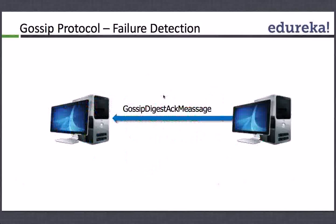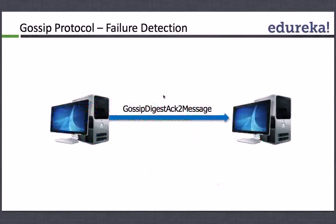And then the first requesting node sends an acknowledgement back saying that, okay, I received that message. This is something called as a three-way handshake protocol, very similar to a TCP protocol. This way, Cassandra nodes are able to understand that the other nodes in the cluster are alive.